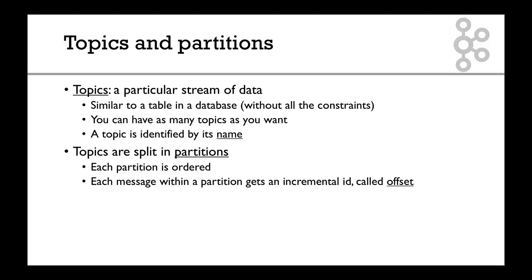Topics are split in what is called partitions. A partition is basically a part of the topic, and the data within the partition is ordered. Each message within the partition, that's your actual data, will get an incremental ID, a number that starts as 0 and goes all the way up, and that number is called an offset.